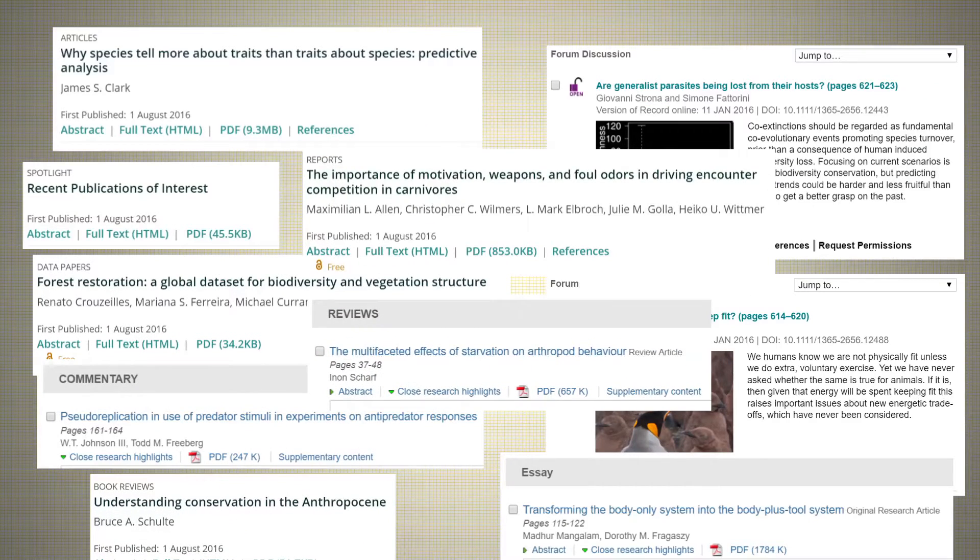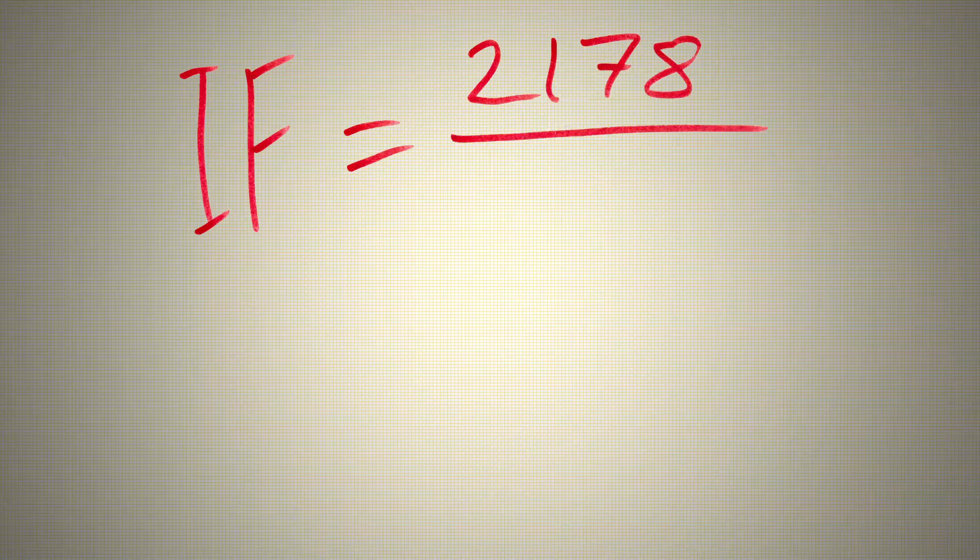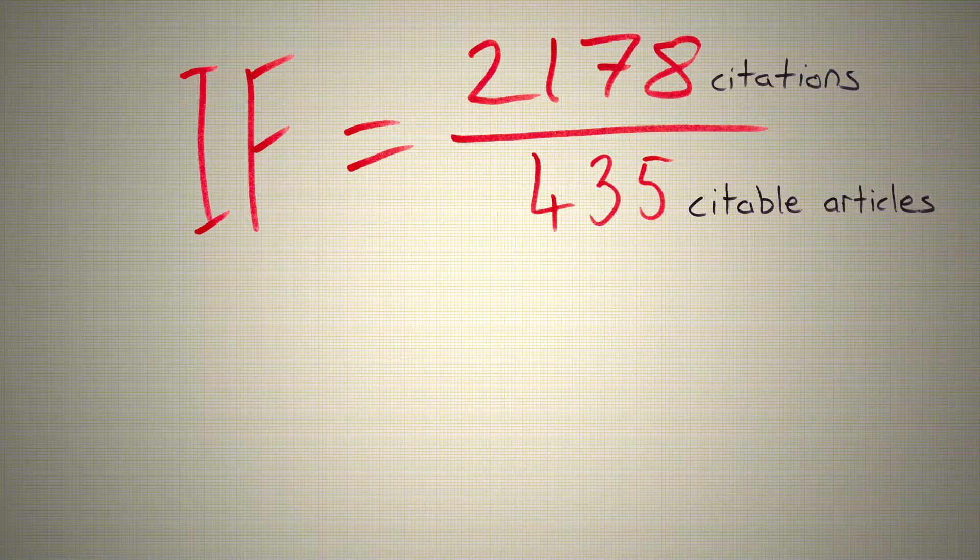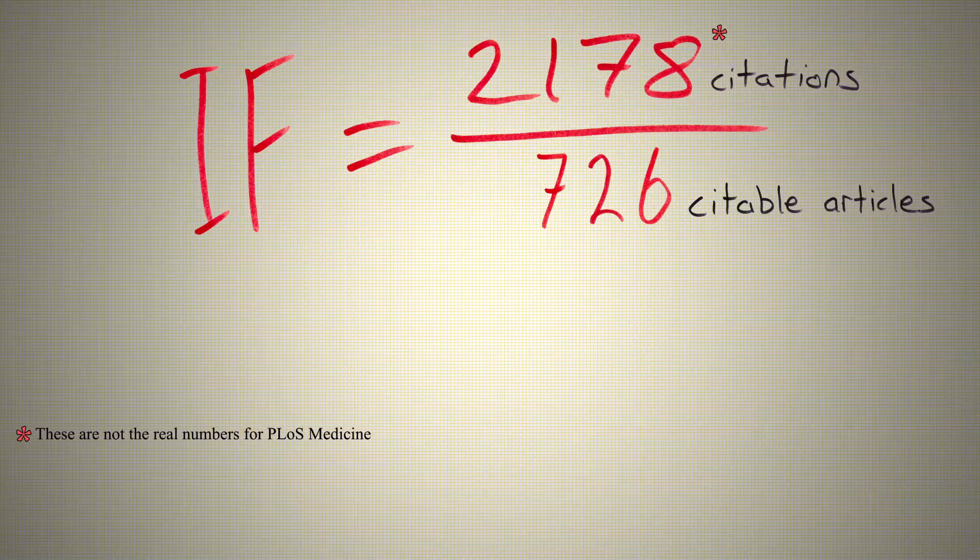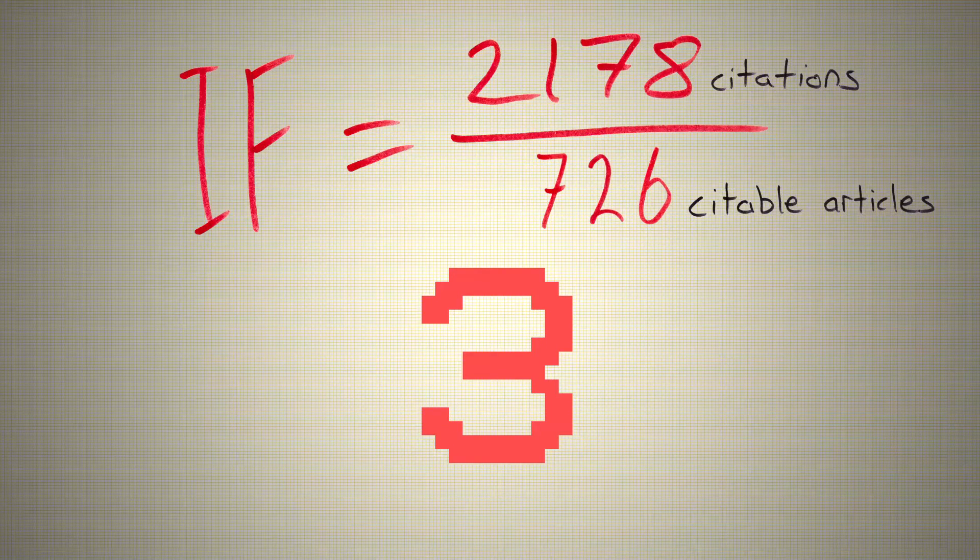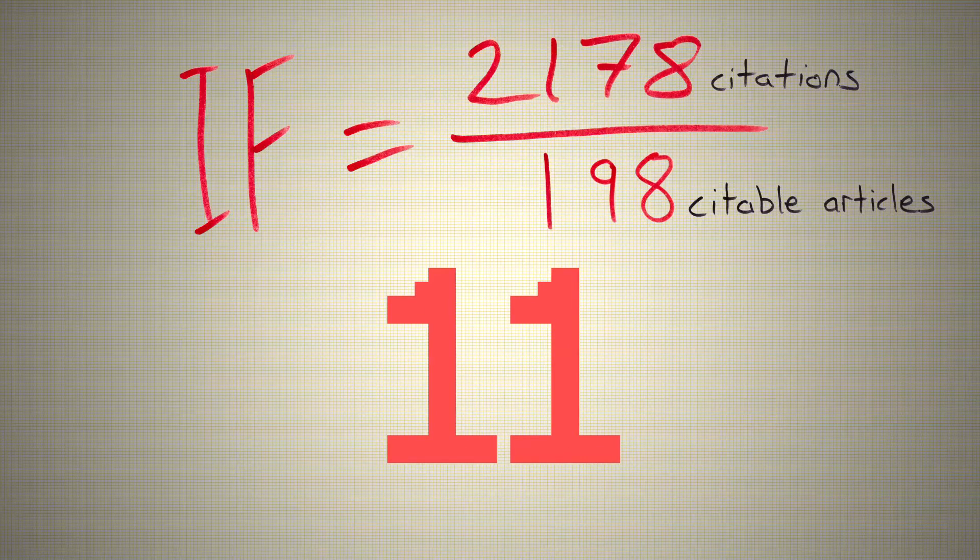Well, we don't know. The criteria that make an article citable is kept secret, and appears to be at the discretion of Thomson Reuters. When PLOS Medicine, a journal about medicine, tried to calculate their own impact factor before it was released, excluding or including different types of articles meant that their impact factor could have ranged from anywhere between less than 3, which is considered good, and 11, which is considered excellent.